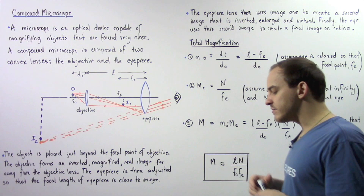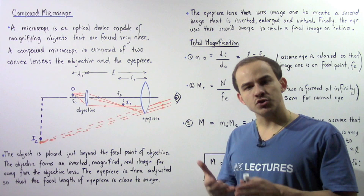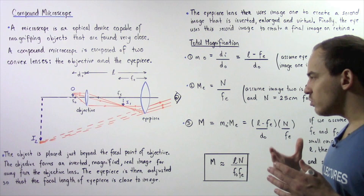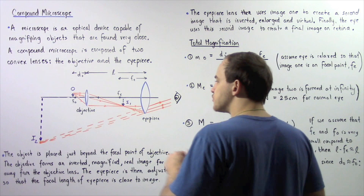We're going to discuss a special type of microscope known as a compound microscope. A compound microscope consists of a system of two convex or converging lenses. One of those lenses is known as the objective lens and the second lens is known as the eyepiece or eyepiece lens. So we have lens one, our objective, and lens two, our eyepiece.